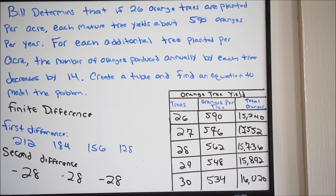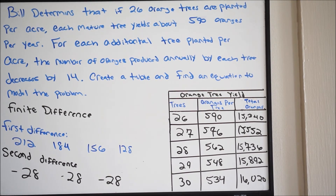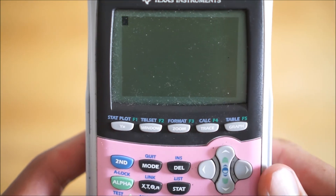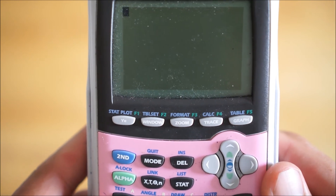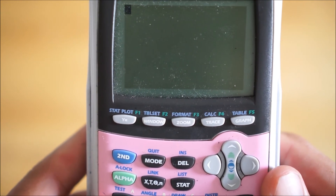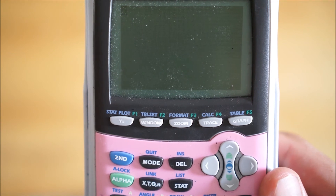Now we need to find an equation. Now that we know that we're dealing with a quadratic, we can find an equation. And I'm going to show you how to do that — we're going to actually use our calculator for this. So I'm going to zoom in on my calculator so you can see what's going on here.